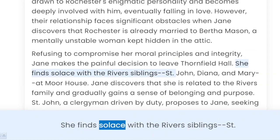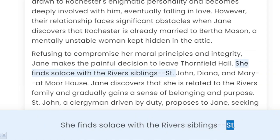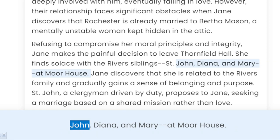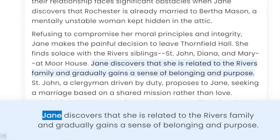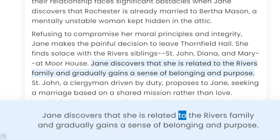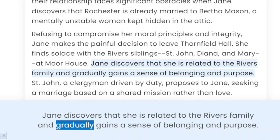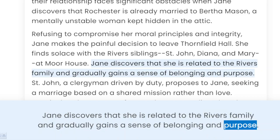She finds solace with the Rivers siblings — St. John, Diana, and Mary — at Moor House. Jane discovers that she is related to the Rivers family and gradually gains a sense of belonging and purpose.